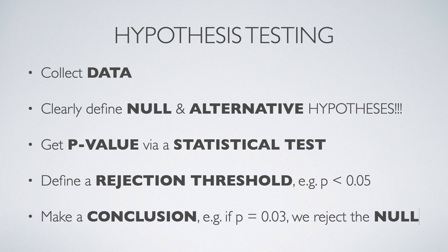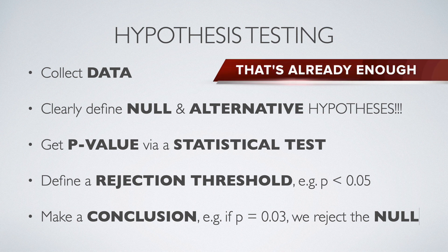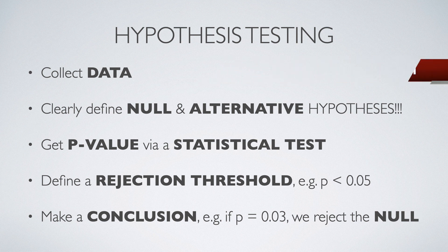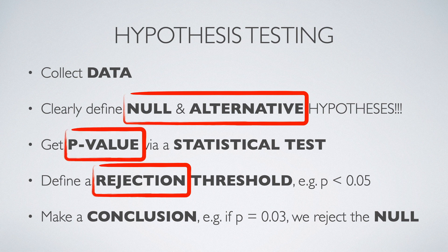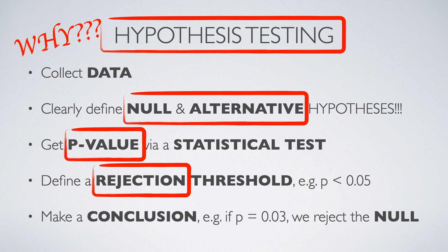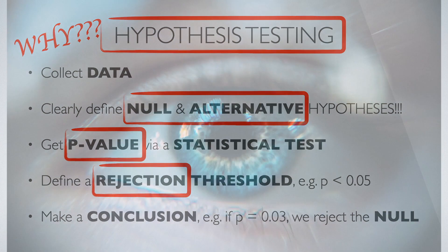you make a conclusion. For example, if p-value is equal 0.03, we reject the null hypothesis in favor of the alternative hypothesis. That's actually enough to get you started with hypothesis testing. But if you want to know what exactly null and alternative hypotheses are, why we only reject the null but never accept it, what is p-value and why do we need hypothesis testing at all, keep watching.